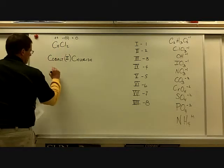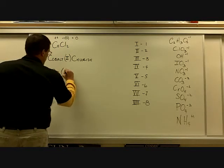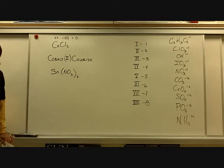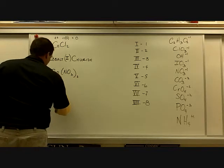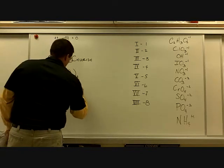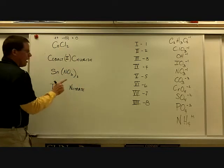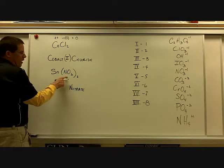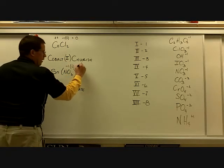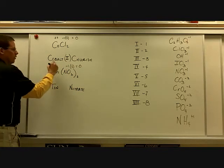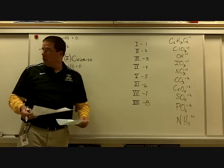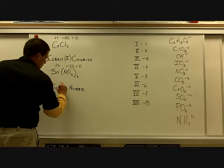Let's look at Sn(NO₃)₂ at the bottom. Sn is element 50 — tin. NO₃ is nitrate. What's the charge on each nitrate? Negative-1. We have 2 of those, so the charge on the tin must be plus-2. Check the periodic table — tin can be 2 or 4, so plus-2 is valid. This is tin(II) nitrate.